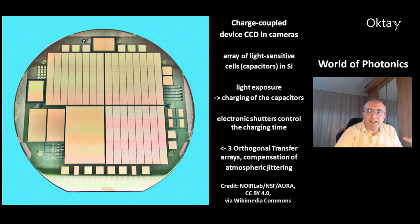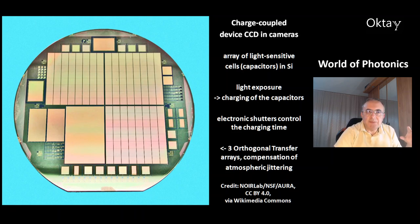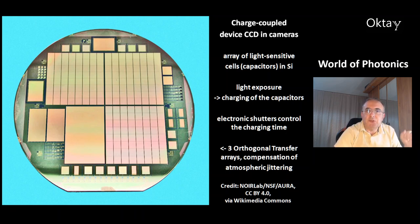Here's another example: the charge-coupled device, or CCD, used in cameras. This is an array of light-sensitive cells — capacitors in silicon. Light exposure causes a charging of the capacitors, and electronic shutters control the charging time. In this picture you can see three orthogonal transfer arrays, which are used for compensation of atmospheric jittering.